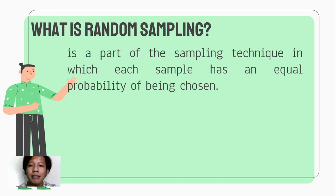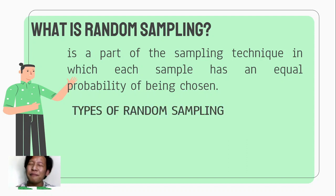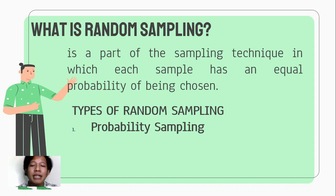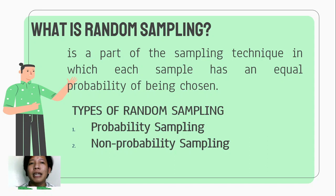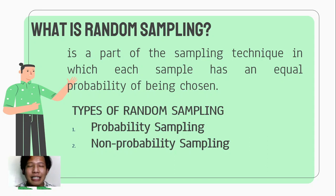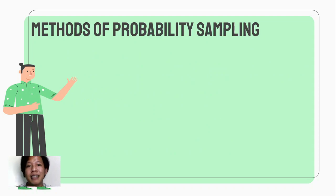There are actually methods or types of random sampling. We have number one: probability sampling, and number two: non-probability sampling. What is the difference? In probability sampling, binibigyan natin ng chance sa lahat na mapili bilang part ng ating sample. Kay non-probability naman, depende sa purpose ng research natin — may medyo subjective component ito.